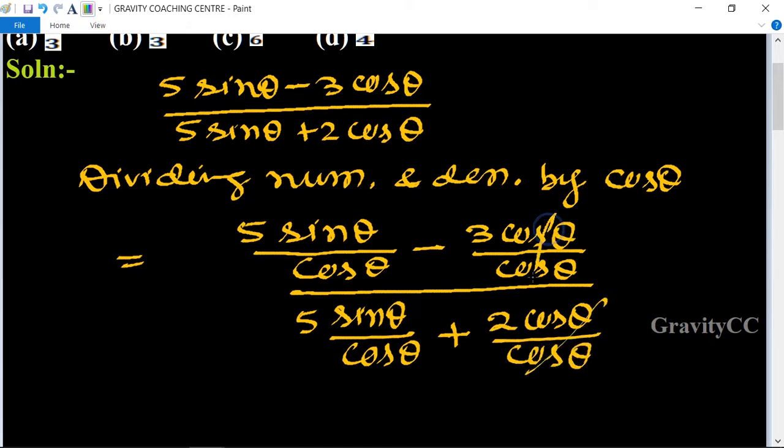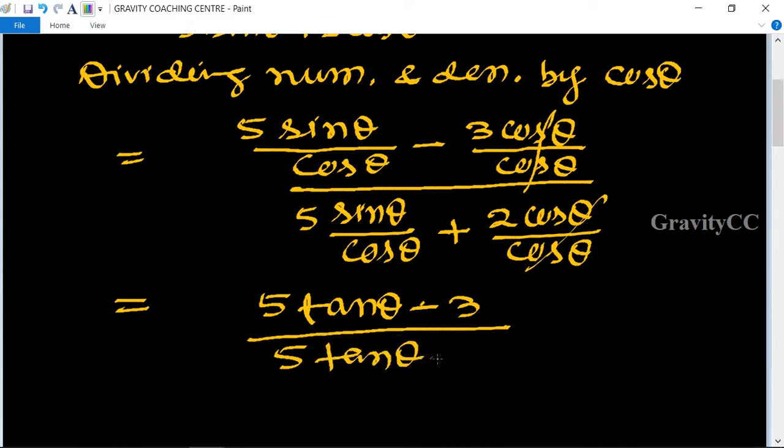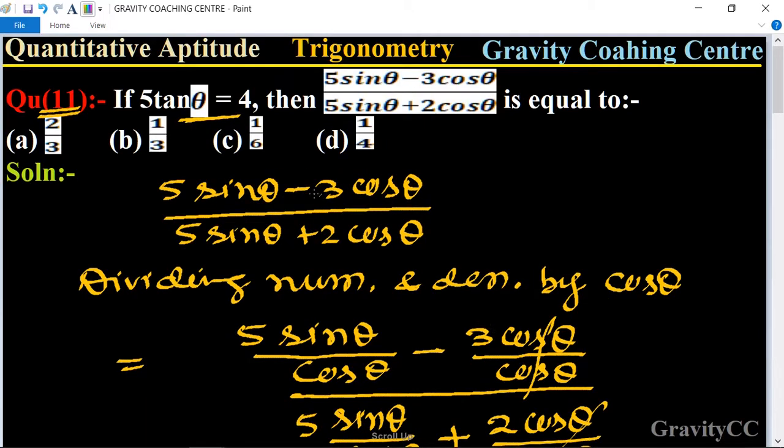So is equal to 5 sin θ / cos θ is equal to tan θ, so 5 tan θ - 3 / (5 tan θ + 2). And here 5 tan θ is equal to 4.